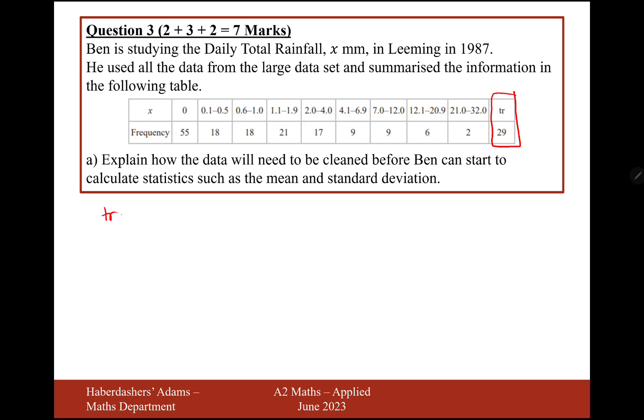So trace is a data record between 0 to 0.05. What we do with trace is replace tr with 0.025, and then you can start to calculate statistics. That's what you do when you clean the data.